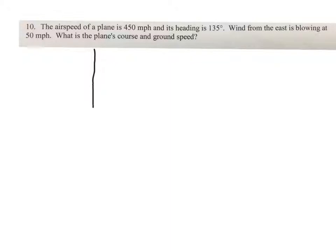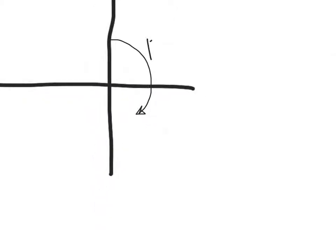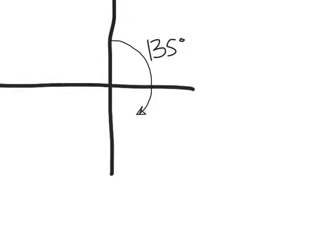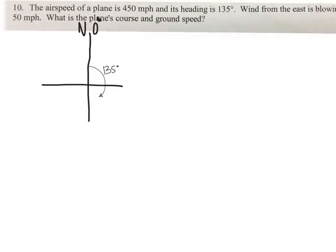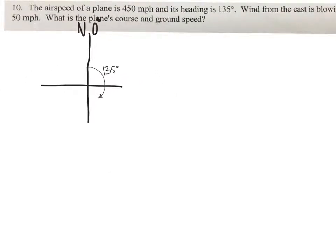So here is our compass where north is zero degrees. The plane is 135. Let's draw that. Here's 135. 135 is to here. And the vector will make the plane be in red. So here is the 450 mile an hour vector representing the airplane.